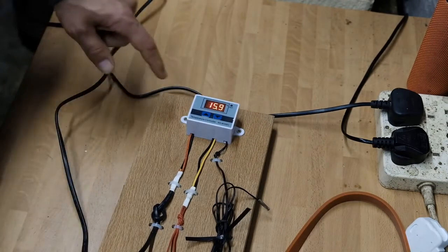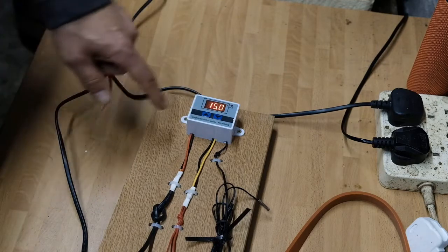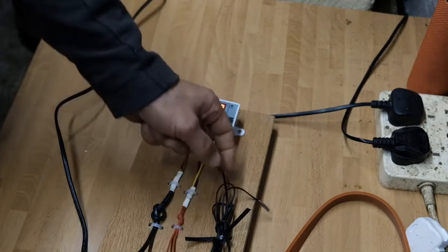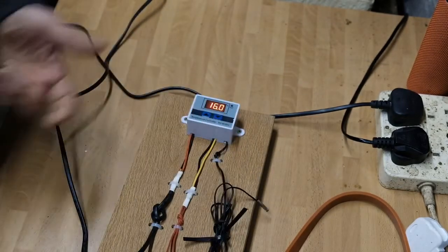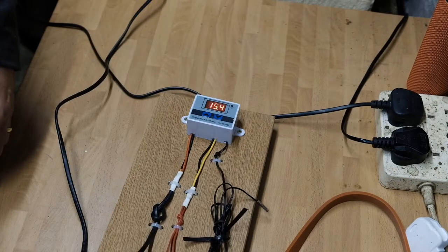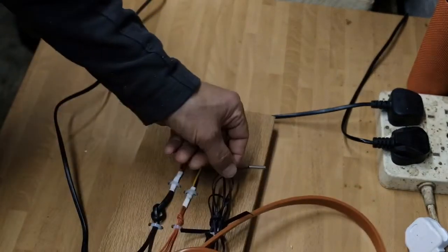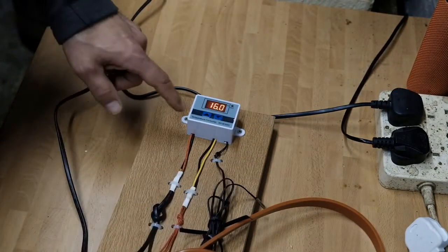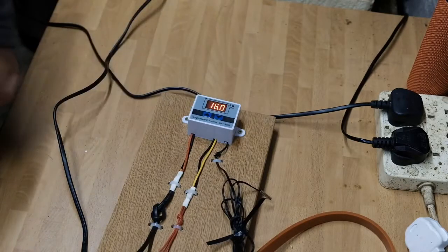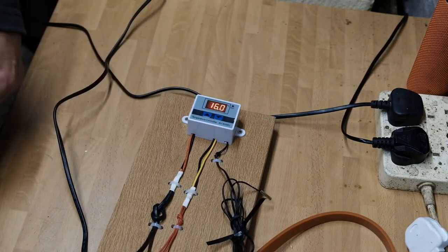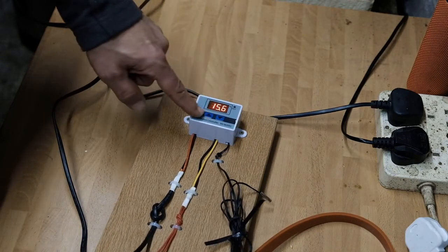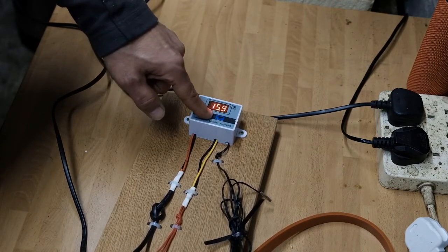Let me demonstrate. I'll reset it. If it's currently 16 degrees, I'll set it to come on at 15.9 and go off at 17. So hold down that button until it starts flashing. There's up and down arrows on here, so it'll come on at 15.9 and go off at 17.